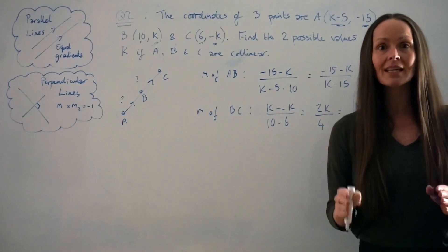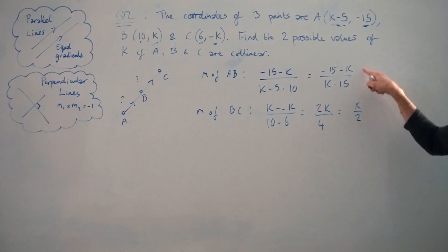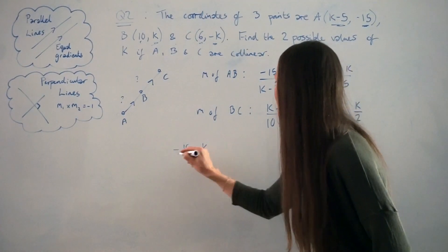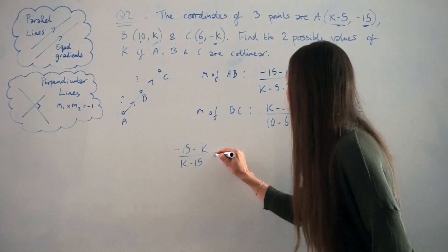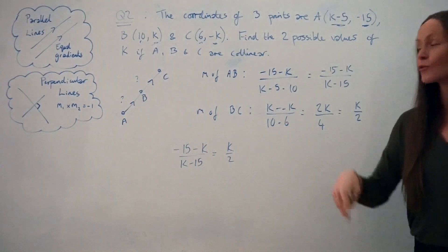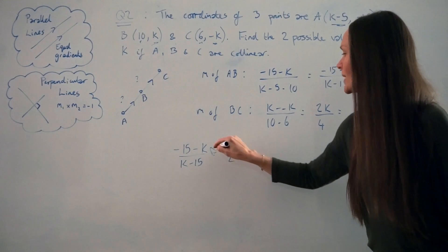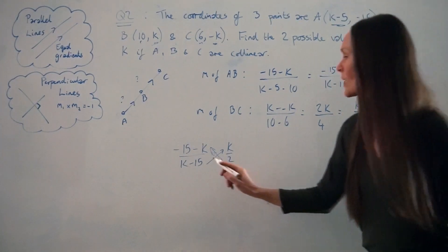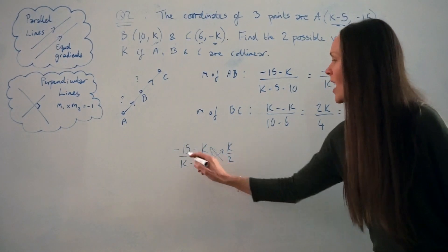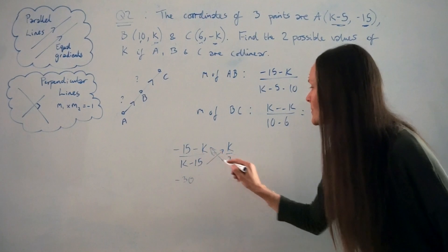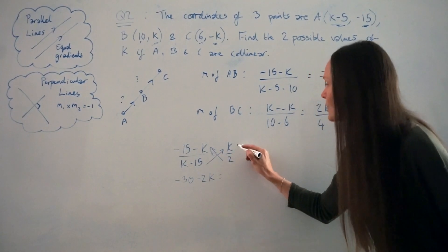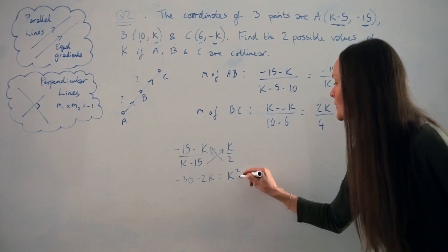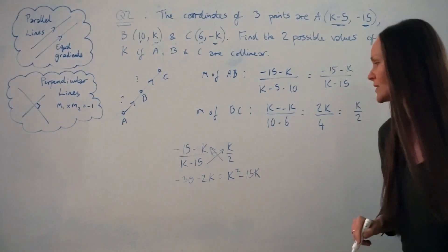Those gradients have to equal each other because the points are collinear. So I'm setting this expression equal to K over 2. Now I have an equation to solve. I'm going to cross multiply — multiplying by 2 and by (K−15). Multiplying the numerator by 2 gives −30 and −2K. Then K multiplied by K is K squared, and K multiplied by −15 is −15K. I've now removed the fractions.